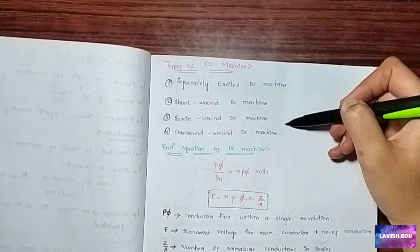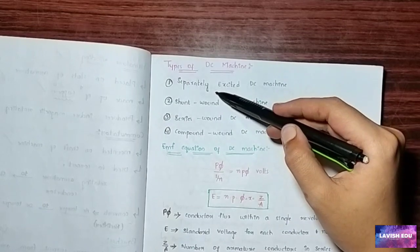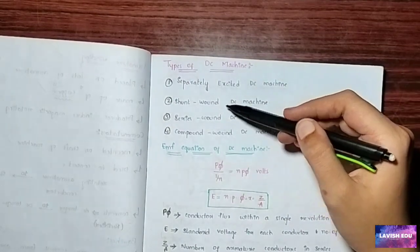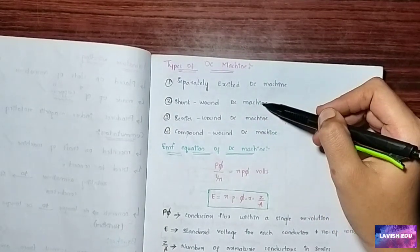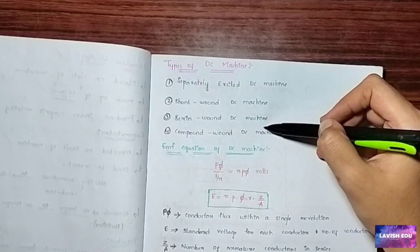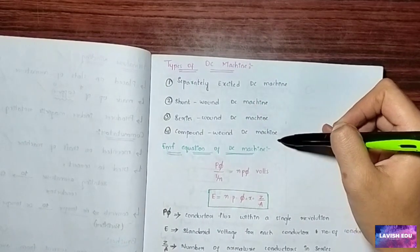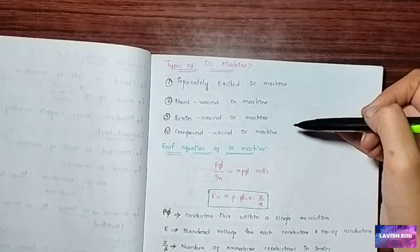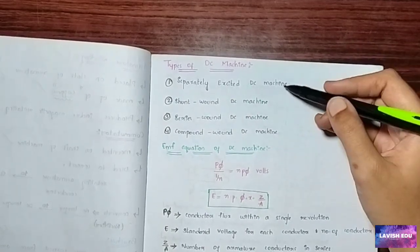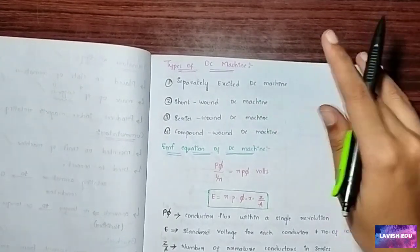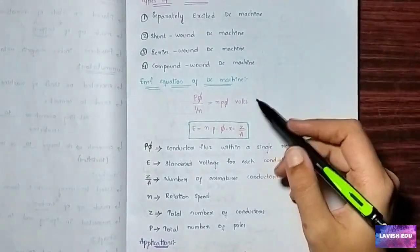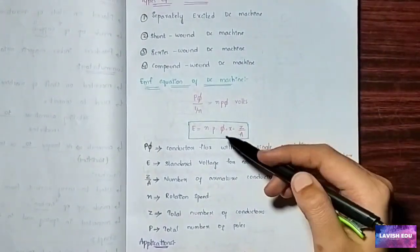We have different types of DC machines. The four main types are: one, separately excited DC machine; two, shunt wound DC machine; three, series wound DC machine; and four, compound wound DC machine.